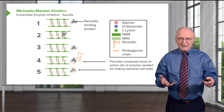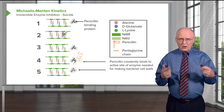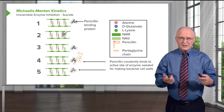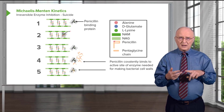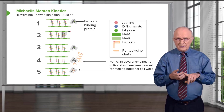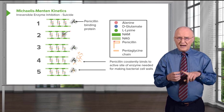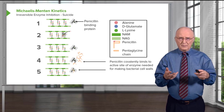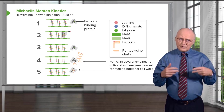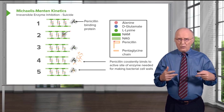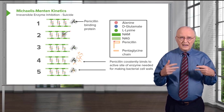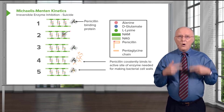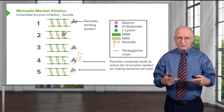In this series of lectures, I have talked about different types of inhibition: a reversible set that included competitive, non-competitive, and uncompetitive inhibition, and now suicide inhibition, which is an irreversible enzyme inhibition. Our understanding of enzyme inhibition is important for anyone interested in understanding the mechanism by which drugs work or in designing drugs themselves.